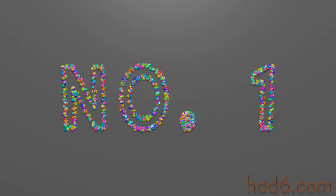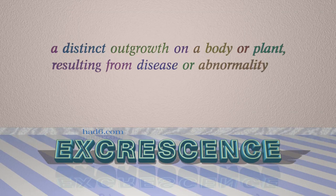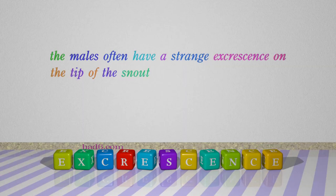Number 1: Excrescence, which means a distinct outgrowth on a body or plant, resulting from disease or abnormality. For example: The males often have a strange excrescence on the tip of the snout.